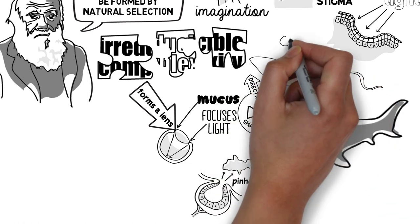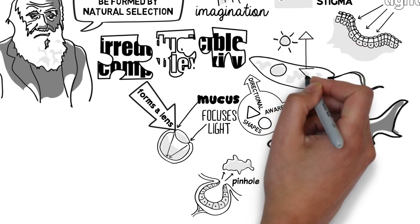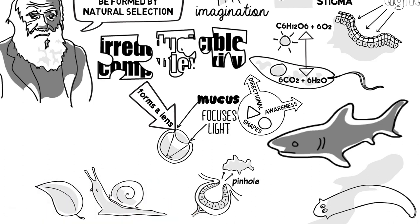Organisms like green algae have a patch of light sensitive cells and use them to find light for photosynthesis. Flatworms have a pit containing these cells allowing them to detect the shadow of potential predators. Snails have blurry vision that is good enough for them to move around and find food.